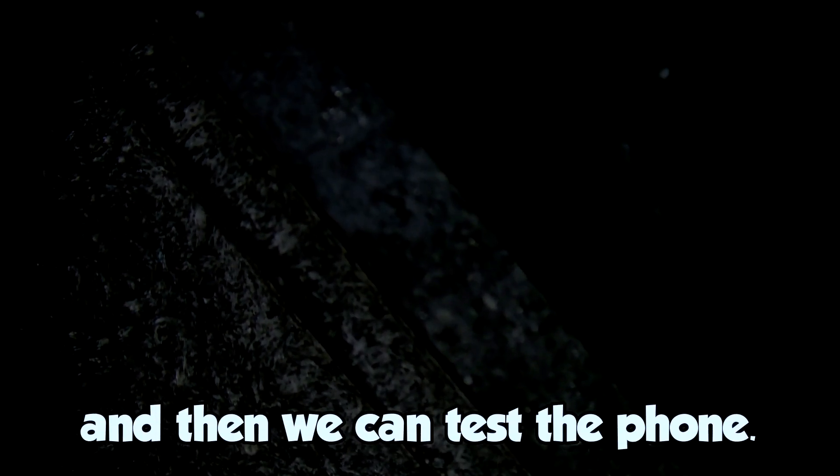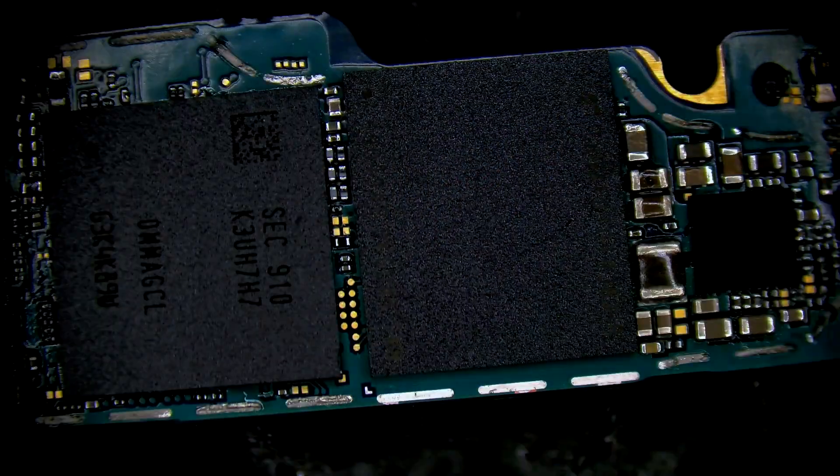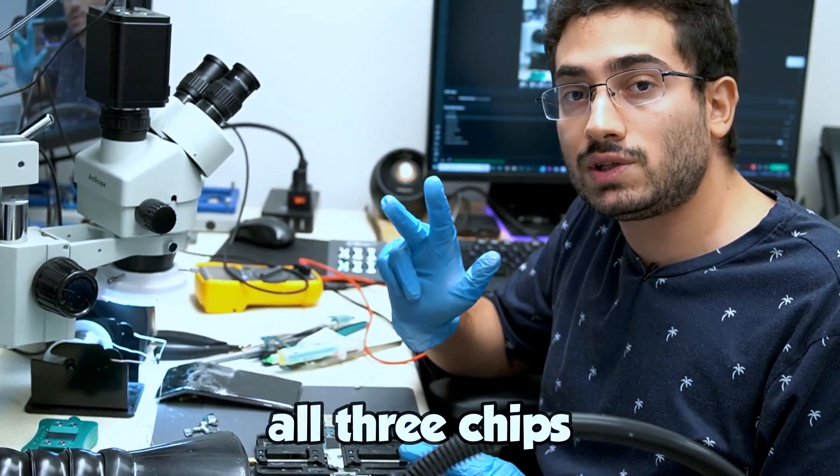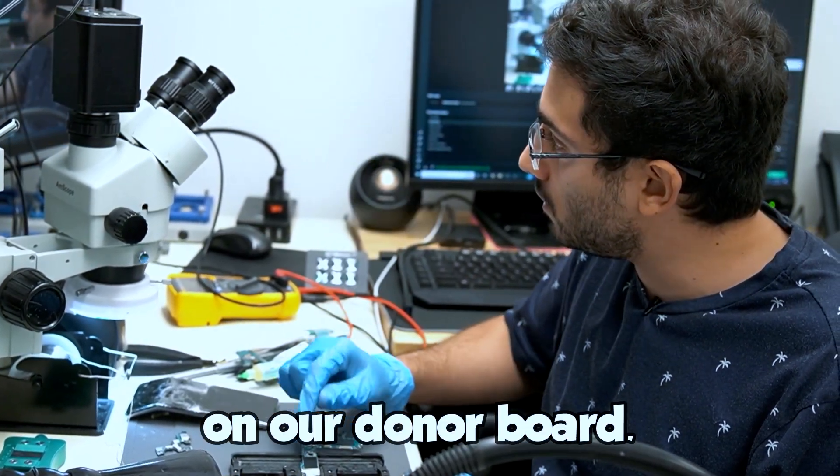Now we will install the UFS chip. And then we can test the phone. All three chips installed. CPU, RAM, UFS. On our donor board.